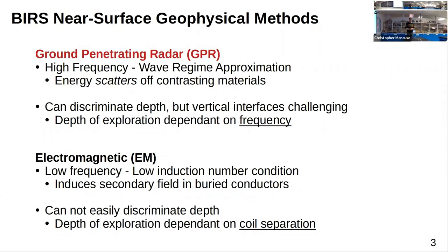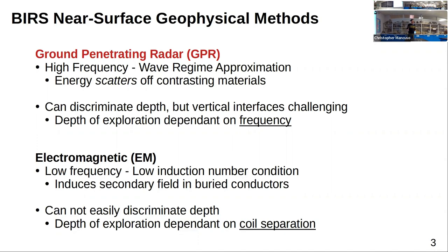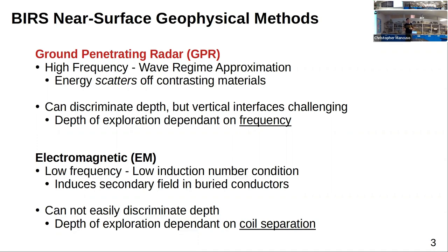We'll be talking about ground penetrating radar — it's an electromagnetic method — and we're also using supporting information from electromagnetic surveys. GPR uses high-frequency signals that propagate through the earth, scatter off objects, and reflect back to the unit, giving a sense of depth. Electromagnetic surveys use much lower frequency, inducing a secondary field in conductive objects which then re-radiate and are detected. In general, GPR depth depends on signal frequency — lower frequency means deeper sensing at a cost of resolution — whereas EM depth is more dependent on the separation of the coils.